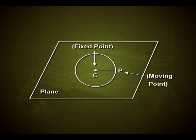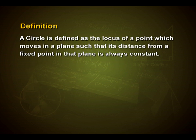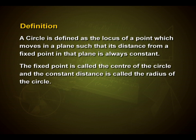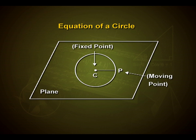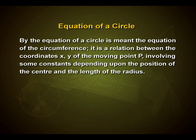First let us look into the definition of a circle. A circle is defined as the locus of a point which moves in a plane such that its distance from a fixed point in that plane is always constant. The fixed point is called the center of the circle and the constant distance is called the radius of the circle. By the equation of a circle is meant the equation of the circumference.